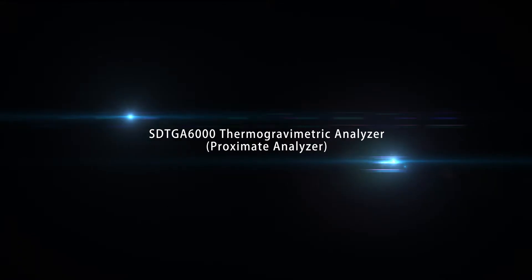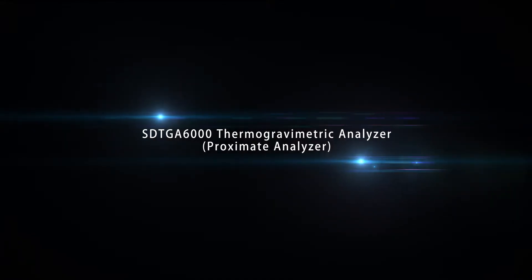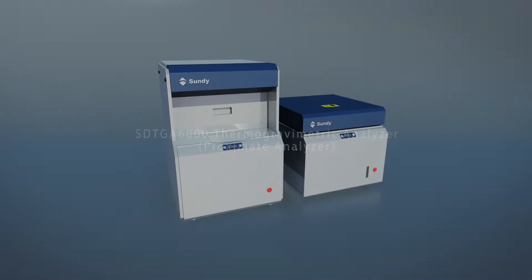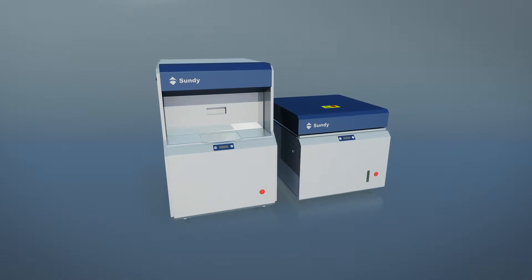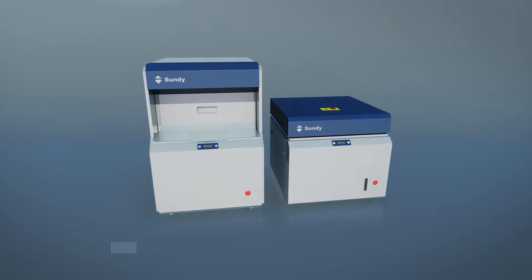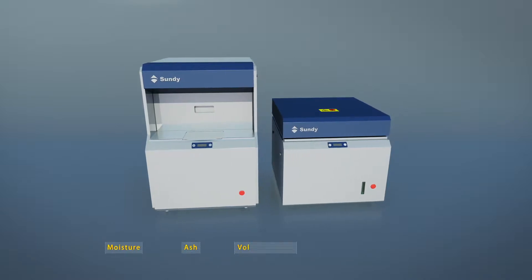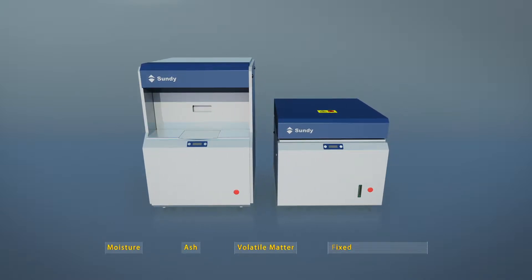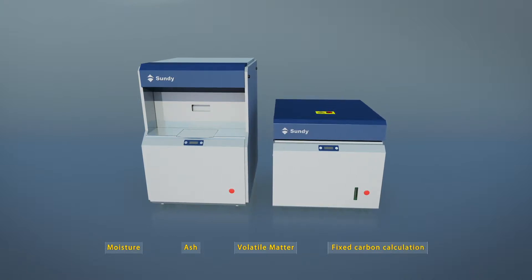SDTGA 6000 Proximate Analyzer can be used to determine the moisture, ash, volatile matter, as well as calculation of fixed carbon.